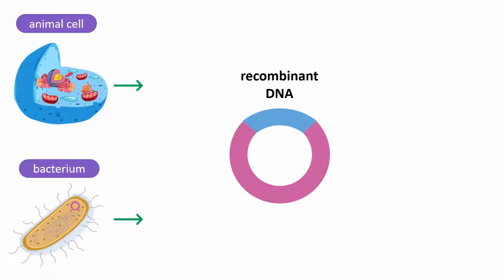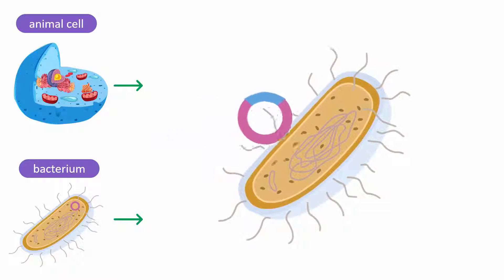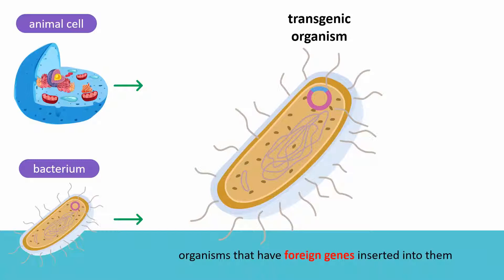This plasmid is now genetically modified and then put back into the bacterium. This bacterium is now a transgenic organism. Transgenic organisms are organisms that have foreign genes inserted into them.